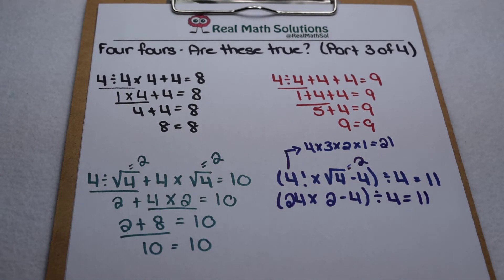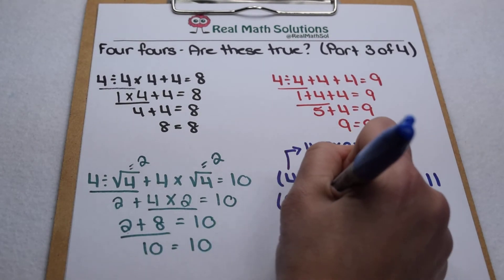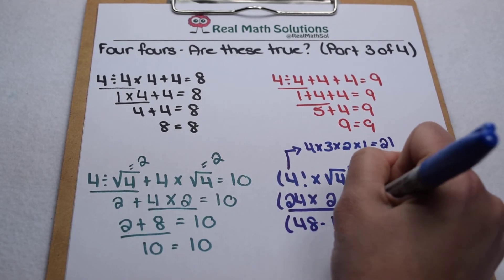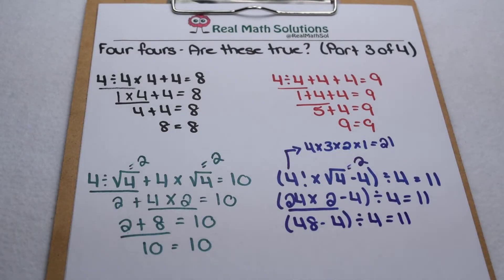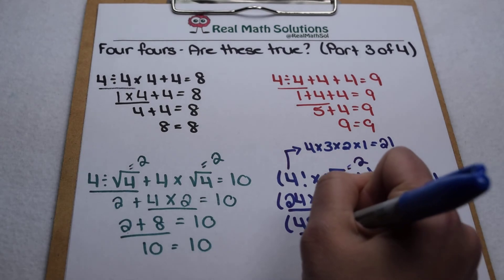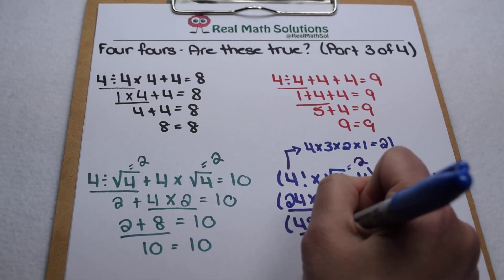Now we can go ahead and start solving inside our parentheses. 24 times 2 gives me 48, so inside my parentheses I still have 48 minus 4 divided by 4. Finish evaluating inside our parentheses, 48 minus 4 is 44,